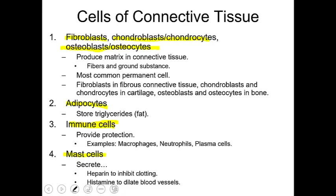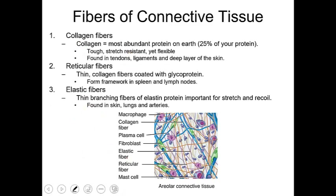Now let's talk about the different fibers. The most abundant protein in the body — and on earth — is collagen. Collagen is stretch-resistant, flexible, and strong. It's found in tendons, ligaments, and the deeper layers of skin. Ligaments connect bone to bone; tendons connect bone to muscle. Collagen gives our skin a certain tautness. As people age, they produce less collagen, which manifests as wrinkles — hence many anti-aging products advertise collagen or collagen-boosting ingredients.